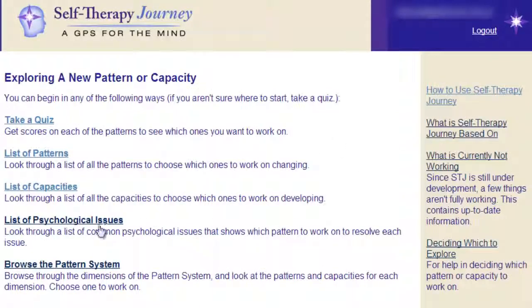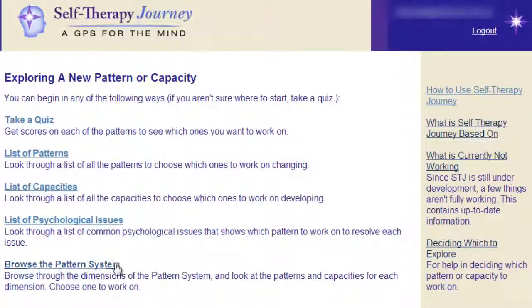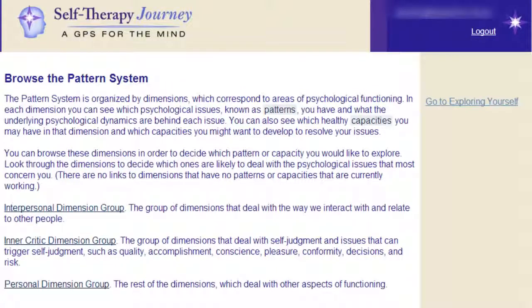You may wish to look through the list of psychological issues if you have an area you particularly wish to work on first. Or if you're familiar with the pattern system, or you want to get to know it, you can browse the pattern system's dimensions, knowing that each dimension contains a number of patterns and capacities.